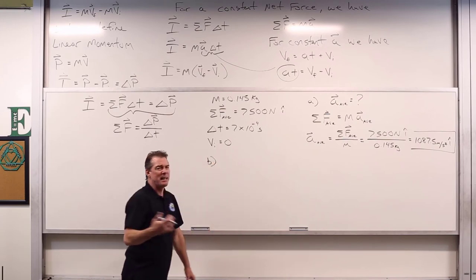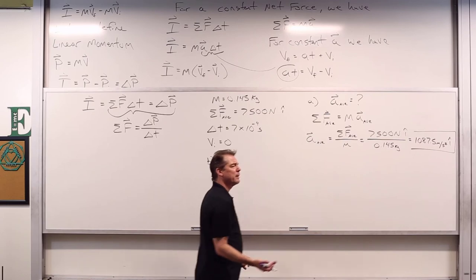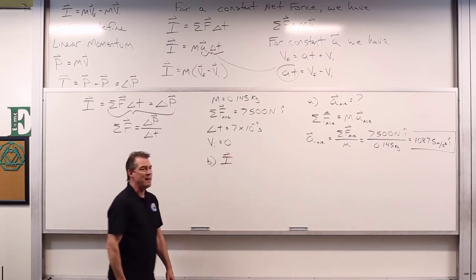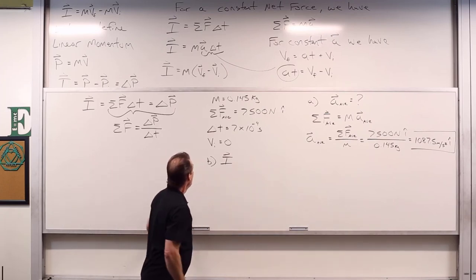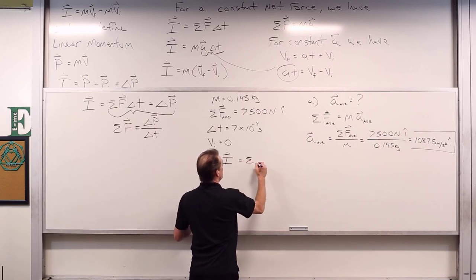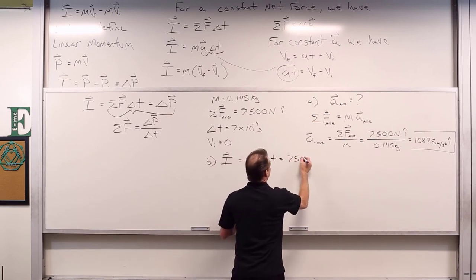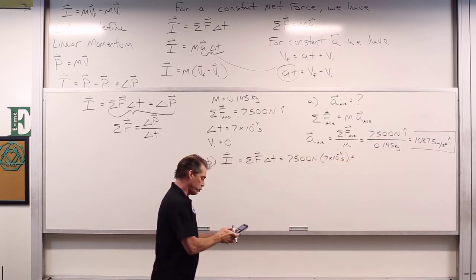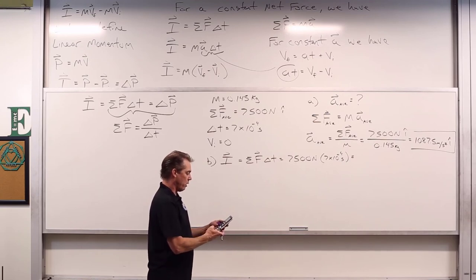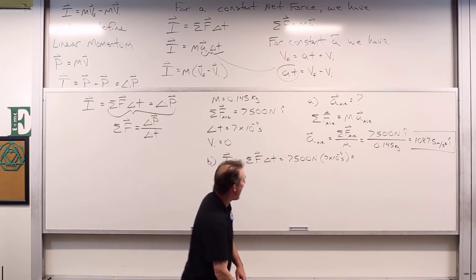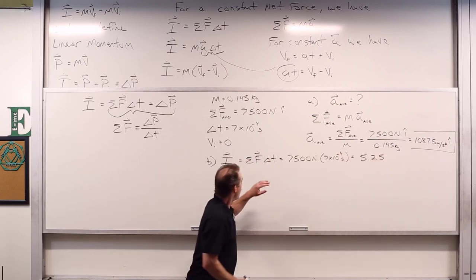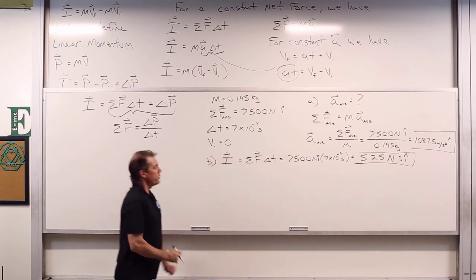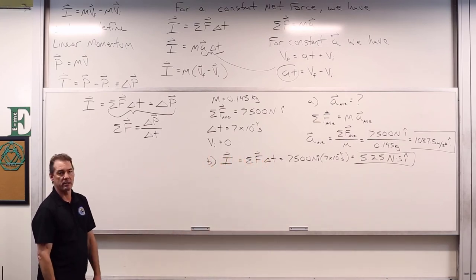What we really want is the impulse and the change in momentum. The average impulse equals net force times ΔT: 7,500 newtons multiplied by 7×10⁻⁴ seconds equals 5.25 newton-seconds i-hat.